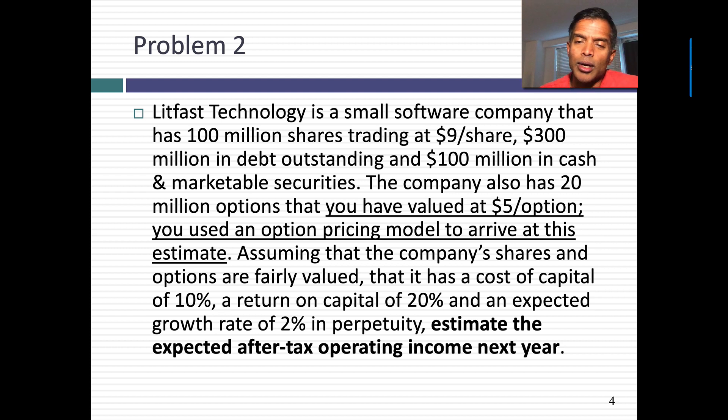Now, let's take a second problem. And this was a really messy one. I'll tell you up front that people had trouble with this problem. Here's what you're given. The company had 100 million shares trading at $9 per share, 300 million in debt and 100 million in cash. Company has 20 million options with a value per option of $5. Key is value per option, not an exercise value. I've told you an option pricing model is used to arrive at this value. I also tell you, these are key words, that the company shares and options are fairly valued. Then I give you information: cost of capital of 10%, return on capital of 20%, growth rate of 2%. And I ask you to estimate the expected after-tax operating income next year.